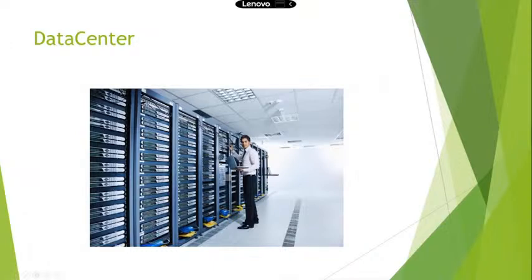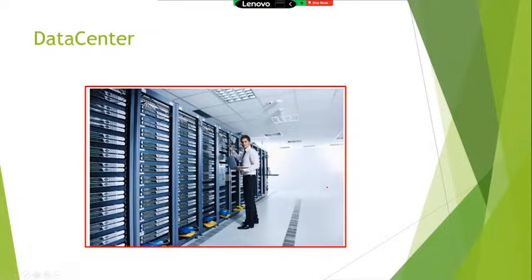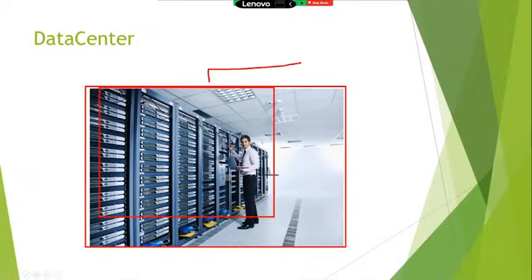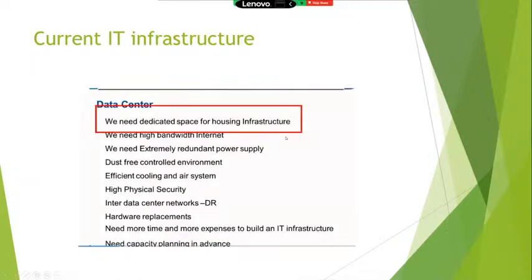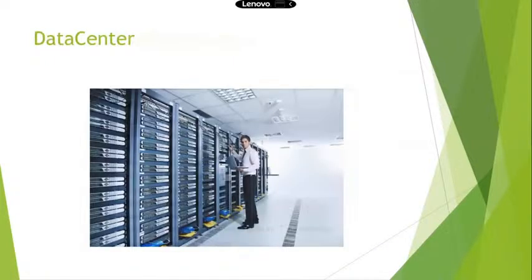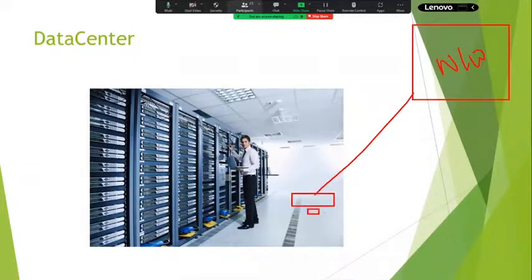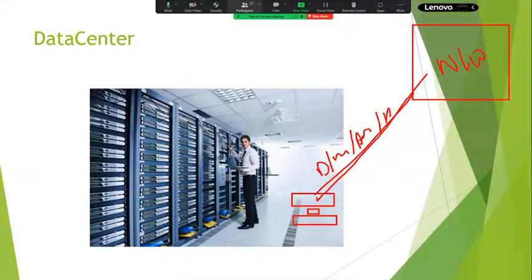First, we have to purchase a building and design it according to data center rules and regulations and guidelines. After designing the data center, we need many things. First, we need dedicated space for housing infrastructure. Next, we need high bandwidth internet. For example, if my organization's data center is in New York and I am sitting in Hyderabad, to access the data, application information, and database, we need high bandwidth internet. That is another cost.